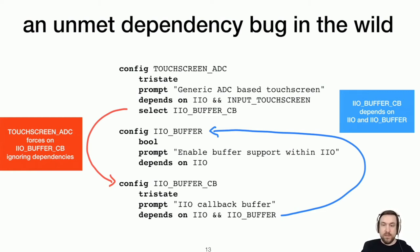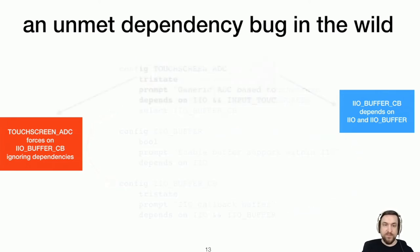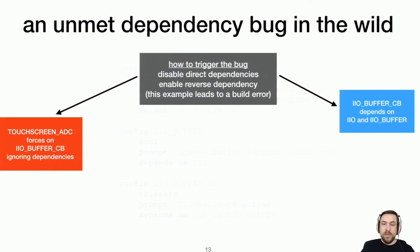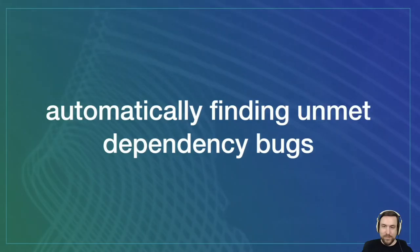So that the general rule for determining about whether an unmet dependency exists is if it's possible to disable the direct dependencies of an option, while also enabling this select construct, what are called reverse dependencies. If both of those can happen at the same time, then it's possible to configure the kernel with this broken specification.